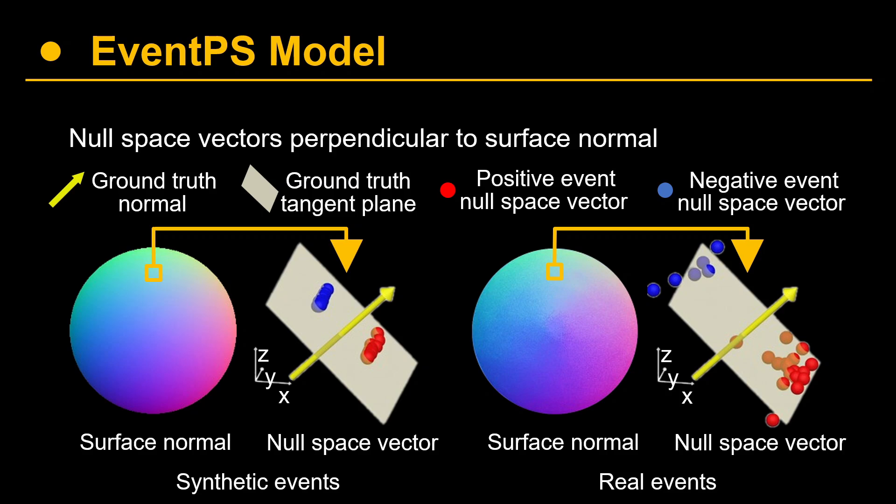For ideal and synthetic events, all the null space vectors lie perfectly on the tangent plane of the surface normal. However, for a real Event Camera, the null space vectors have more noise. To solve this problem, we capture multiple events, convert all of them into null space vectors, and combine them using the SVD algorithm. In this way, we obtain a better surface normal estimate with reduced noise.